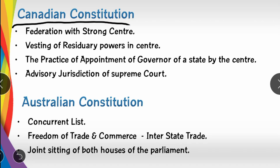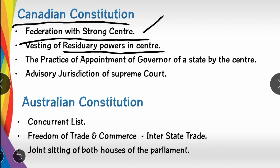Next is the Canadian Constitution. We already know the federal system. The first point from Canada is Federation with a strong center — meaning the central government is dominant. Second, vesting of residual powers in the center. Third, the practice of appointment of the Governor of a state by the center — the President appoints the Governor. All of these are from the Canadian Constitution.